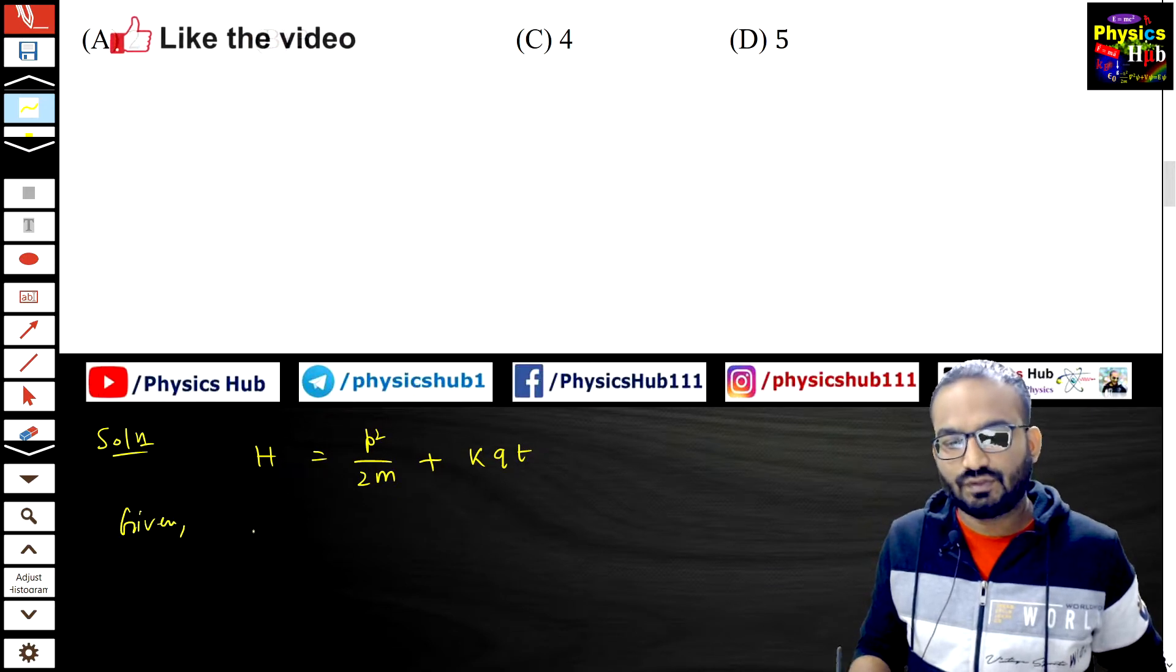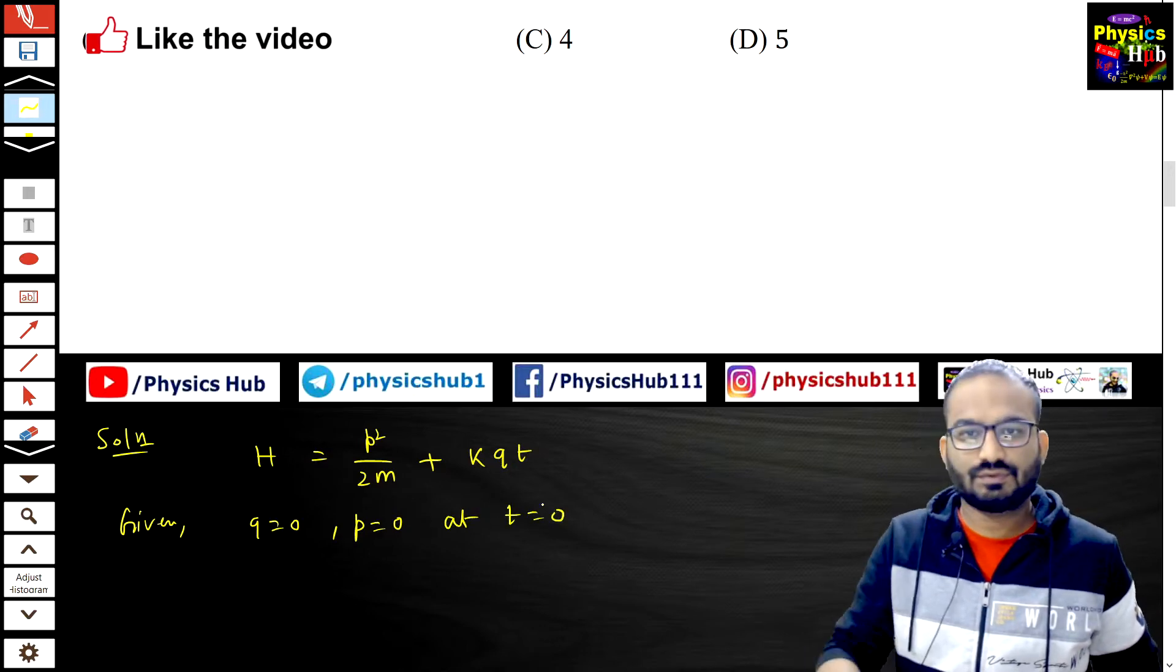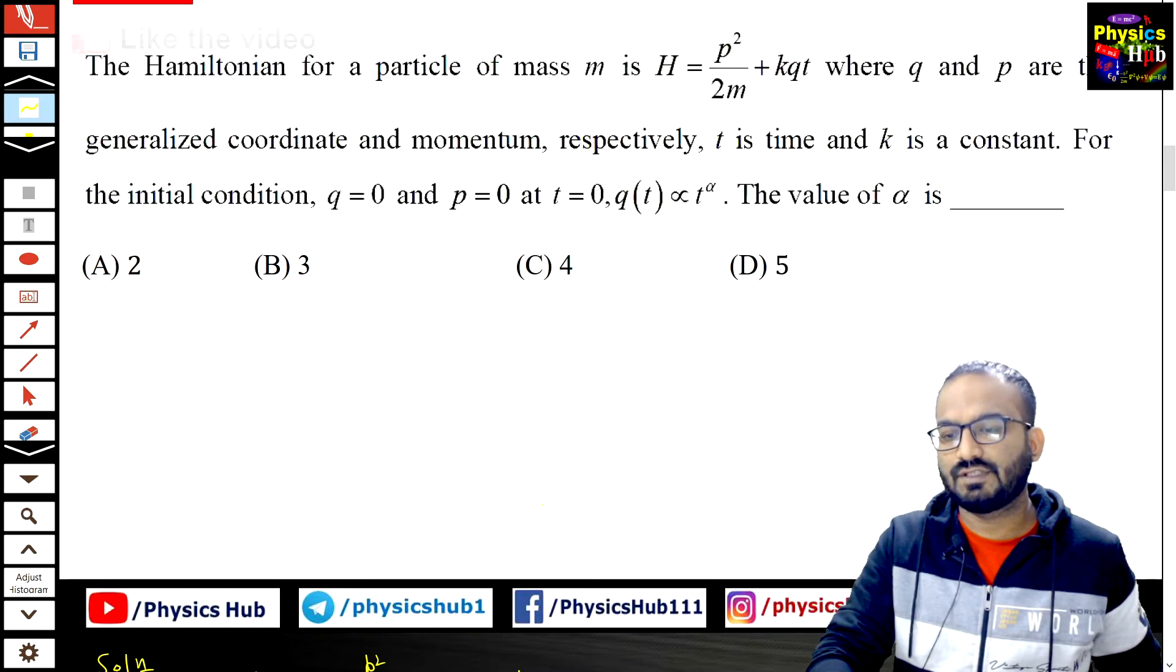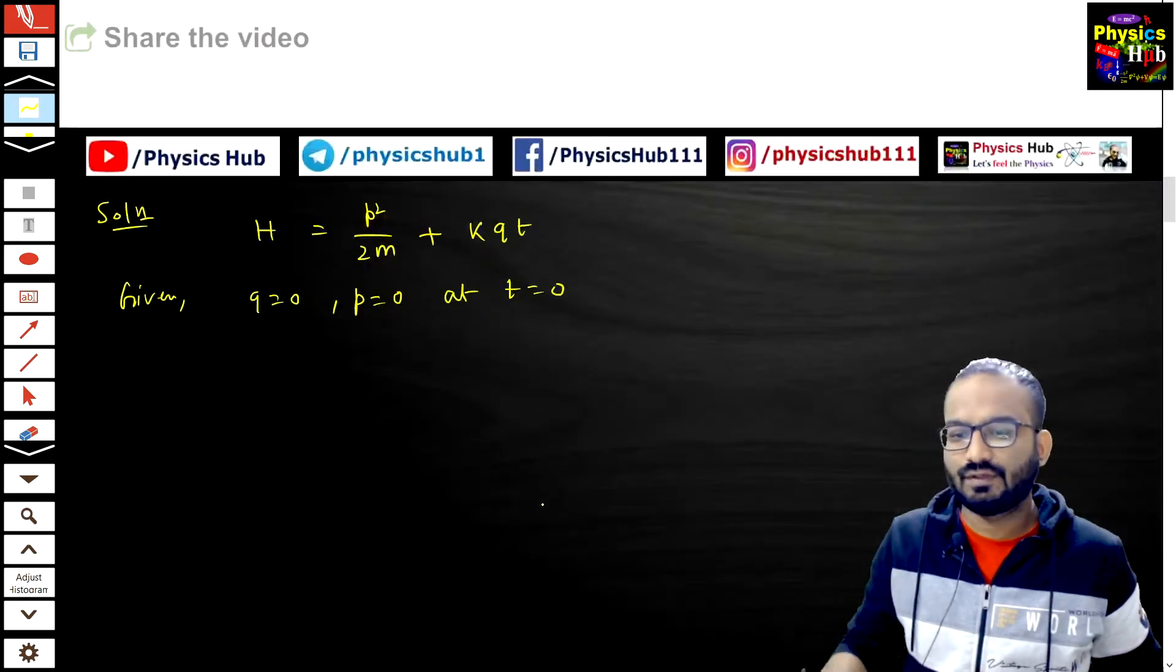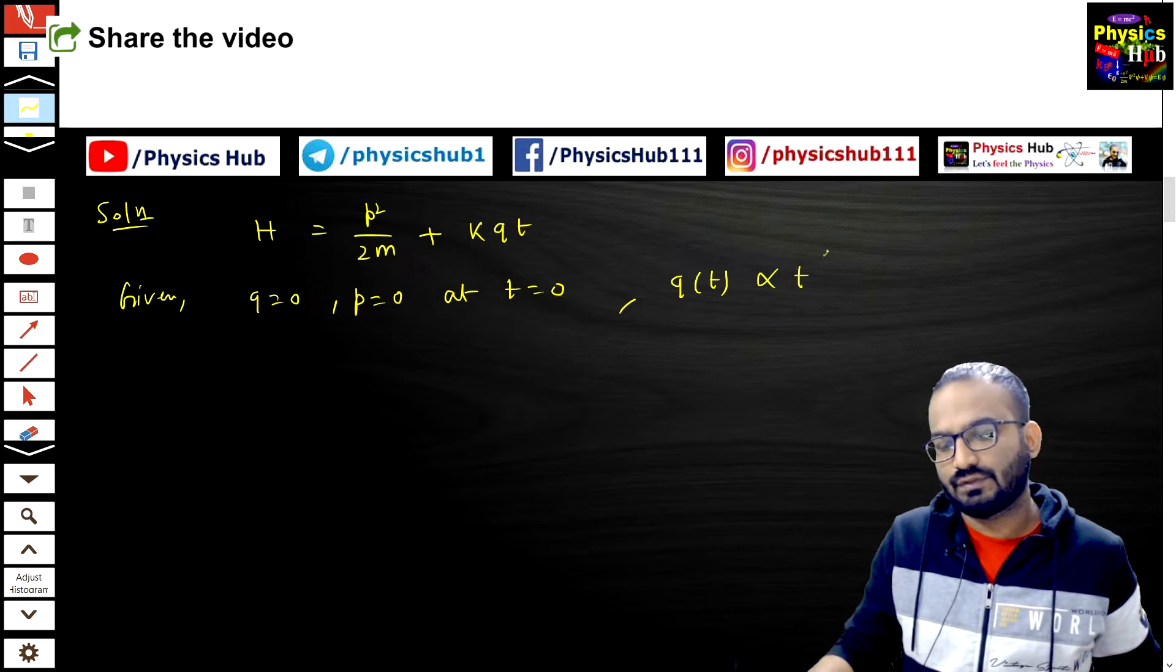For initial condition, q equals 0, p equals 0 at t equals 0. And it has been found q of t is proportional to t to the power alpha. We have to find out the value of alpha.